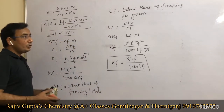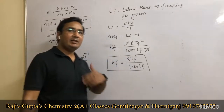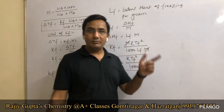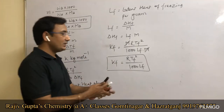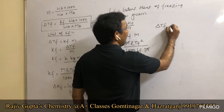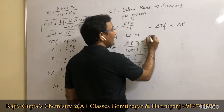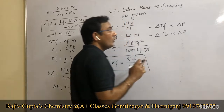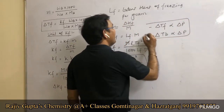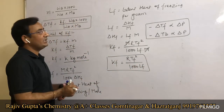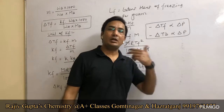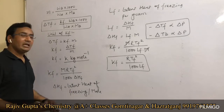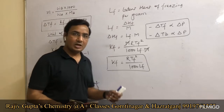Depression in freezing point and elevation in boiling point are both directly proportional to lowering in vapor pressure, and both are directly proportional to molality. The last colligative property we will discuss is osmotic pressure.